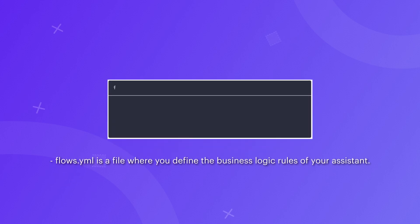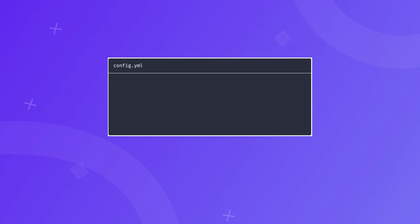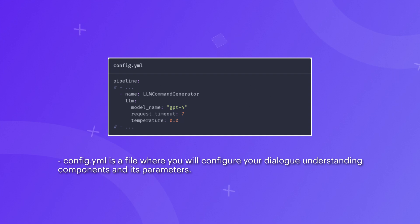Let's go over the files and components you will be working with as you work on implementing this behavior. You will write your business logic inside the flows.yaml file. This is where you will define the business logic rules of your assistant. config.yaml is a file where you will configure your dialogue understanding components and its parameters. For example, this is where you will define the LLM component for your dialogue understanding and more.